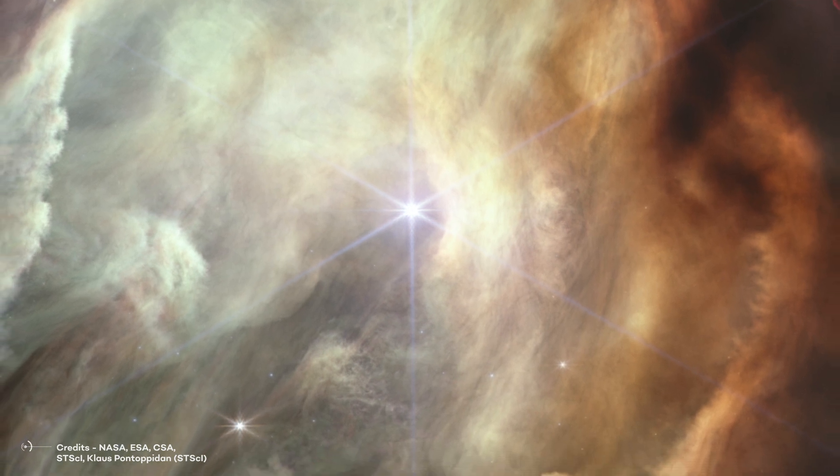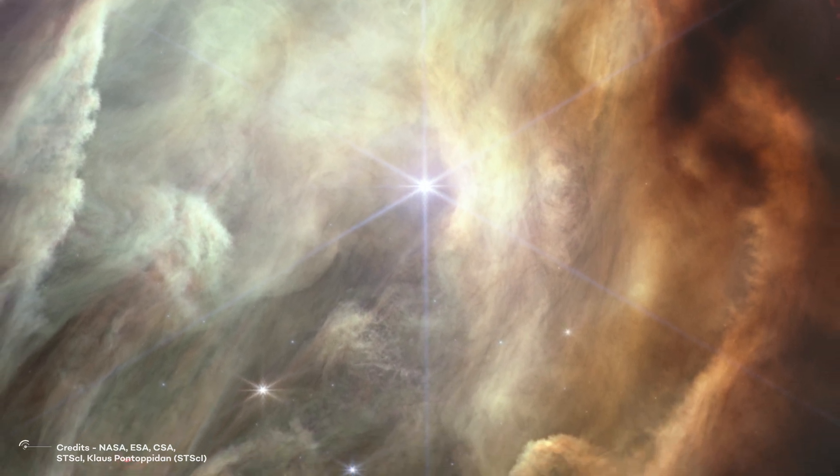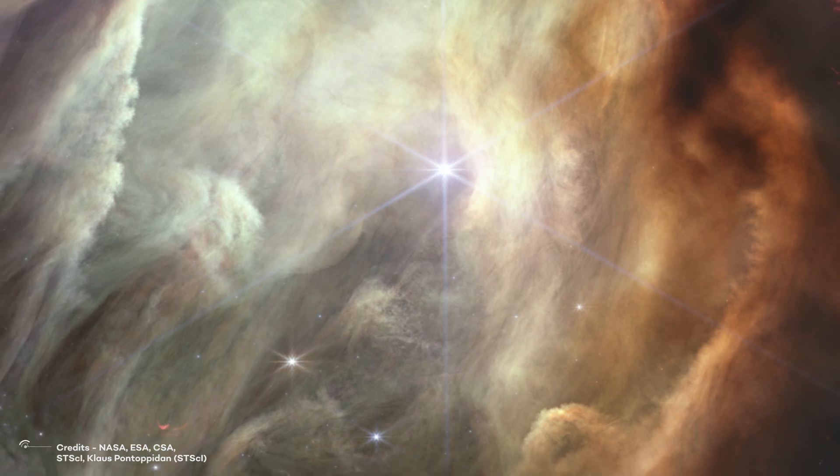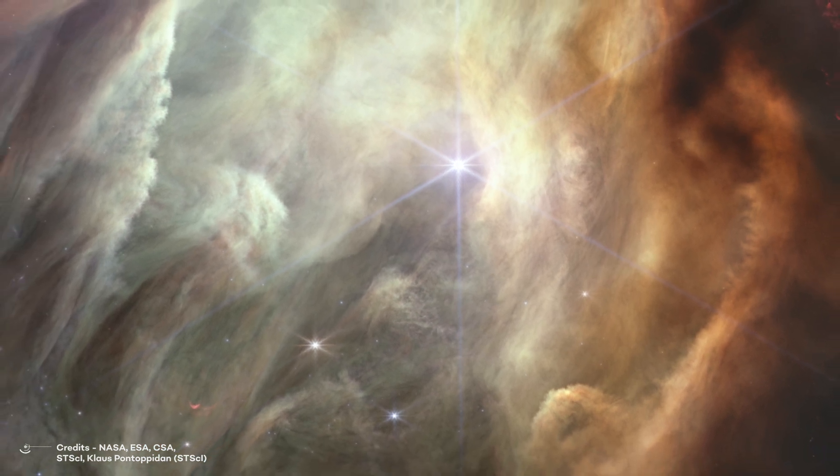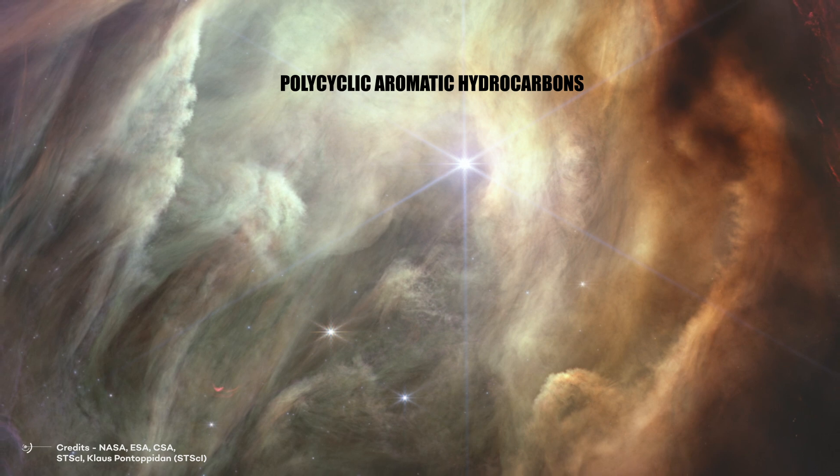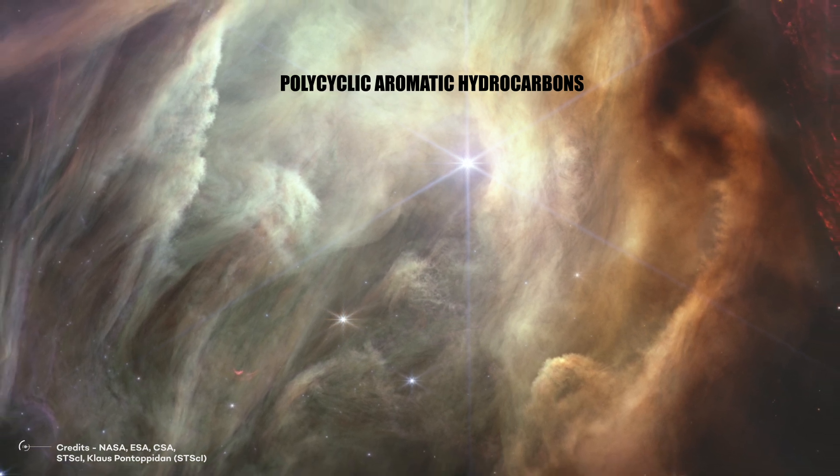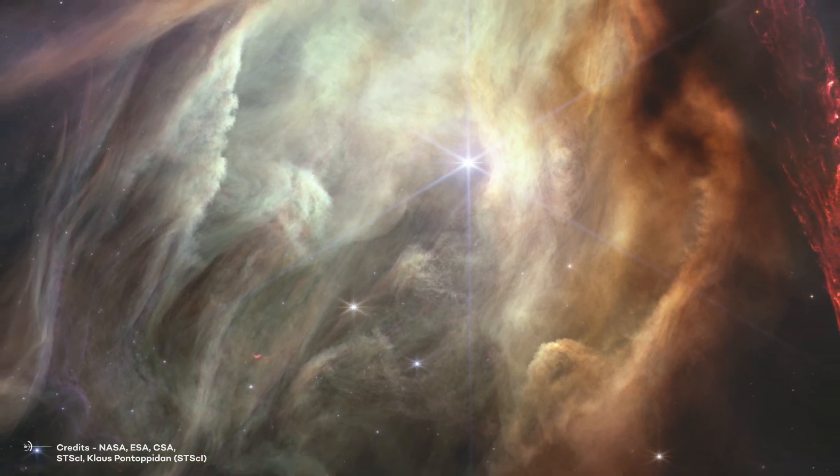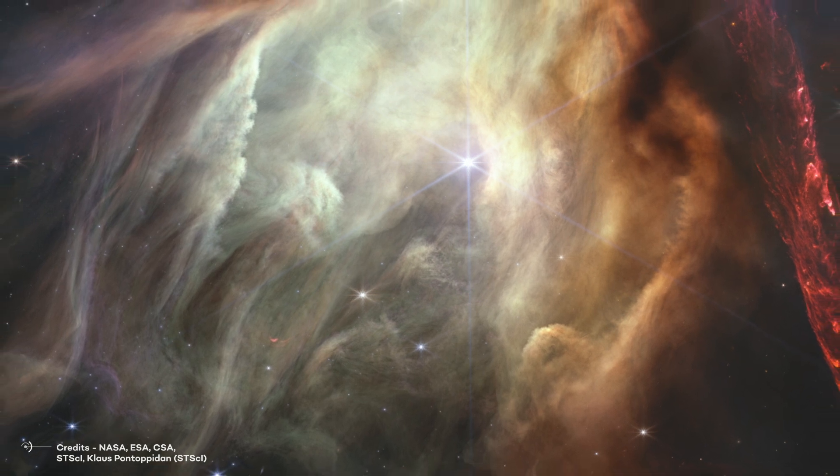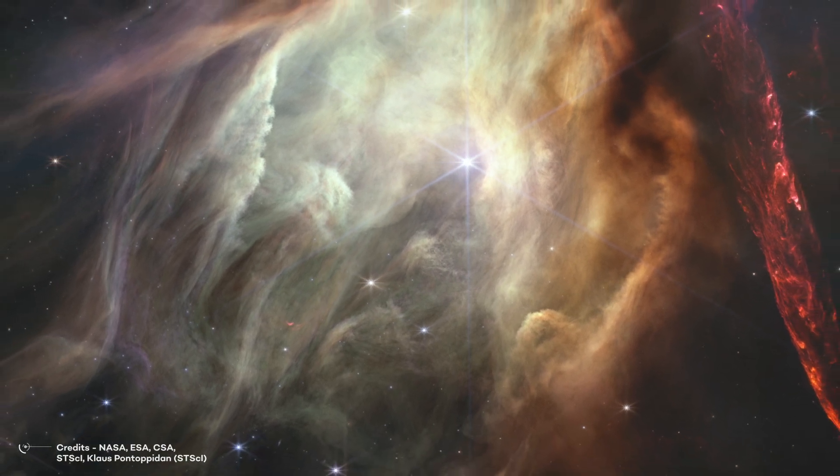These winds are so strong that they are shaping the surrounding gas into a distinct shape. The lighter-colored gas around S1 is made up of polycyclic aromatic hydrocarbons. These are carbon-based molecules that are commonly found in space. They are a vital ingredient for the formation of new stars and planets.